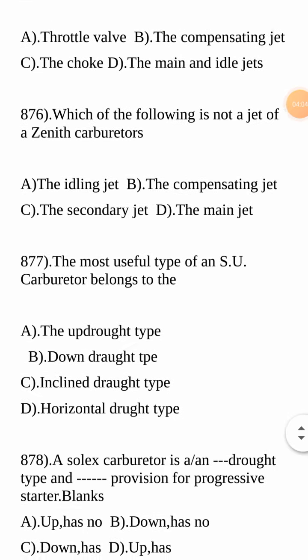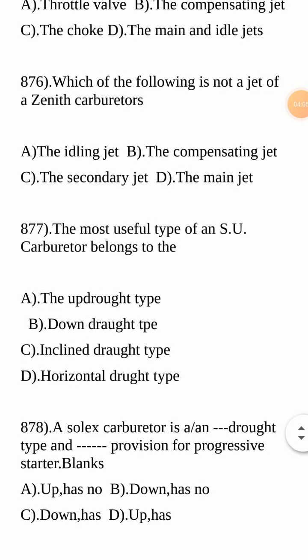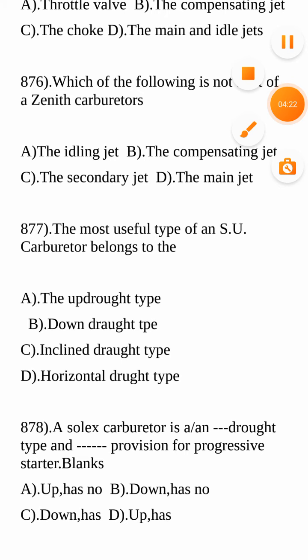Next question: Which of the following is not a jet of a Zenith carburetor? We've seen that the compensating, main, and idle jets belong to the Zenith carburetor. The only option that does not belong to these three is the secondary jet. So your answer is the secondary jet.